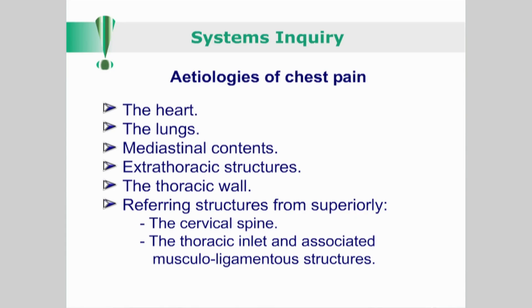Remember that chest pain may originate from any of the structures found within the thorax including the heart, lungs and mediastinal contents. Pain can also radiate into the thorax cavity from extrathoracic structures or from the thoracic wall itself. For referring structures located superior to the thorax, consider the cervical spine, the thoracic inlet and associated musculoligamentous structures.